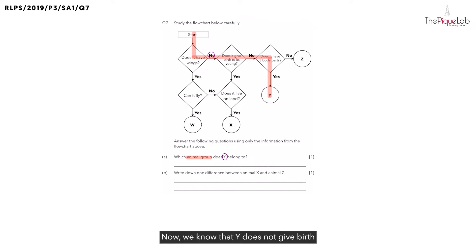Now we know that Y does not give birth to its young alive. Is that a unique characteristic? The answer is no, there are also so many animal groups that do not give birth to its young alive. So is this characteristic helpful for helping us to determine which animal group Y belongs to? No.